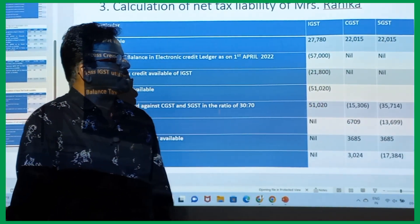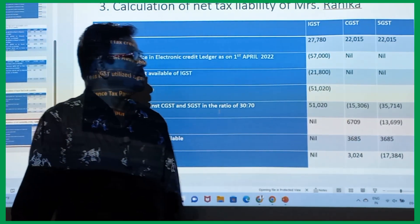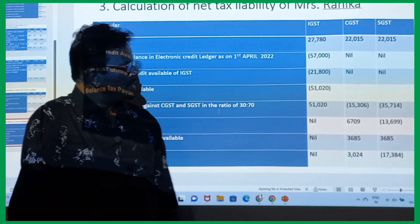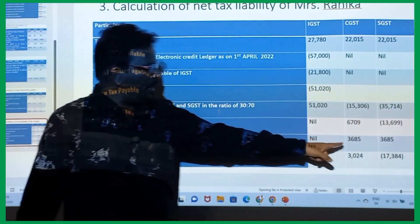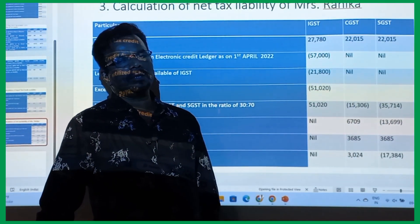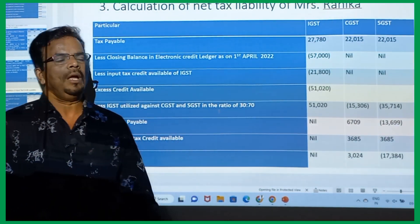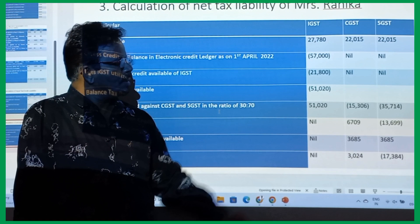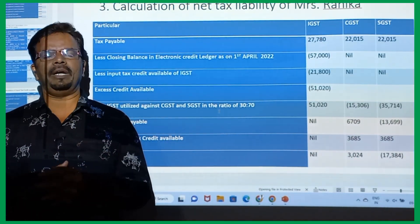After IGST adjustment: CGST liability = 22,015 minus 15,306 = 6,709. SGST liability = 22,015 minus 35,714, giving a credit of 13,699 (i.e., SGST becomes negative — excess credit). ITC from Table 2: CGST credit = 3,685 and SGST credit = 3,685 are also applied. So CGST payment = 6,709 minus 3,685 = 3,024. SGST: 3,685 minus 13,699 — minus becomes plus, giving a receivable/credit of 17,384. So net: CGST payment due = 3,024; SGST credit still available = 17,384.